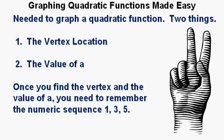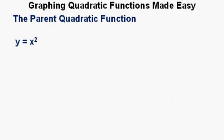Once you find the vertex and the value of a, you need to remember the numeric sequence 1, 3, 5, and then you're set. What's this 1, 3, 5 sequence? Where does it come from? Well, here's where it comes from.